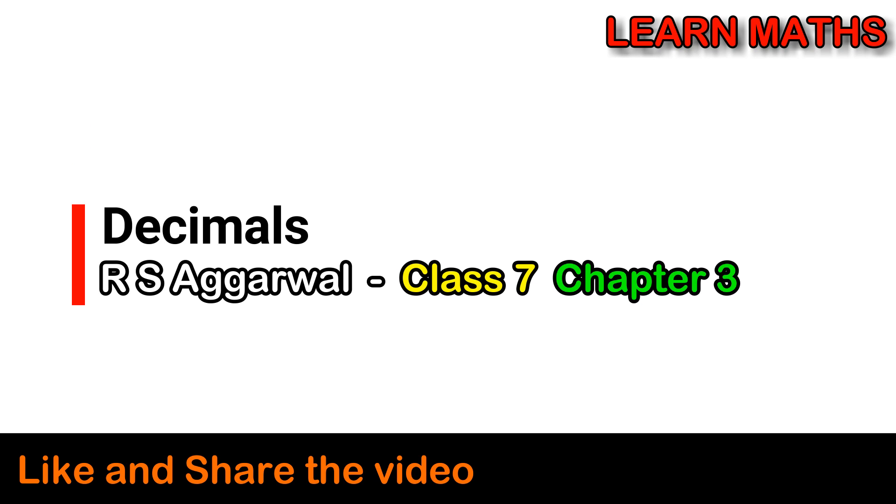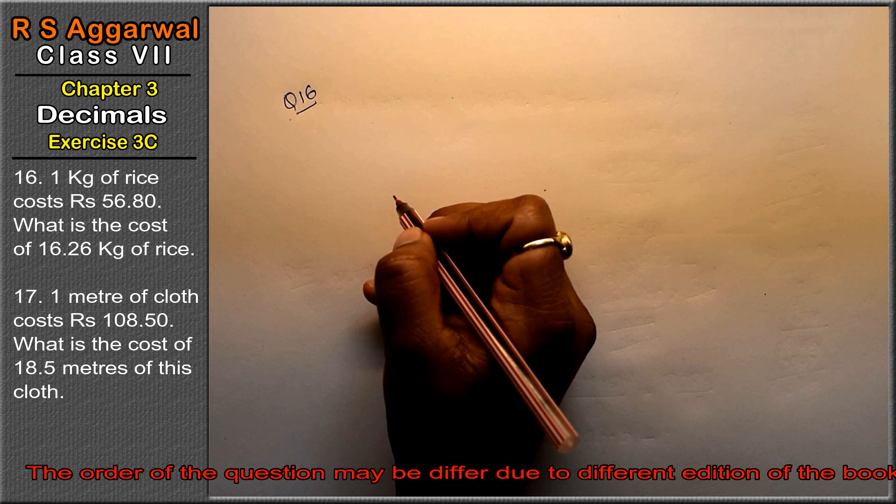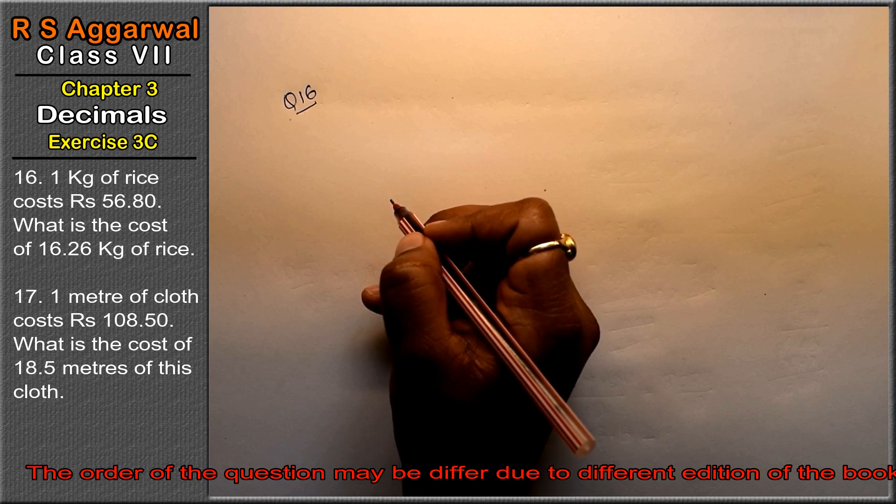Let's do question number 16 of exercise 3C, that is decimals. Question number 16 is: 1 kg of rice costs 56.80 rupees. What is the cost of 16.25 kg of rice?